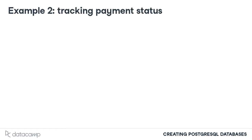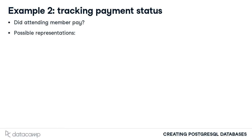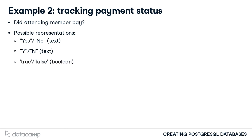Imagine being the organizer of a conference for a marketing professional's organization. You would like to track if members have paid the conference fee. Some possible representations include storing a yes or no status using a text column, storing a Y representing yes and an N representing no using a text column, or storing true for yes and false for no using a Boolean column. Notice the flexibility that is provided by choosing a text representation for this data. Often flexibility is good; however, in this case, a benefit of choosing to represent payment status as a Boolean value is the restriction placed on what will be accepted as valid input.